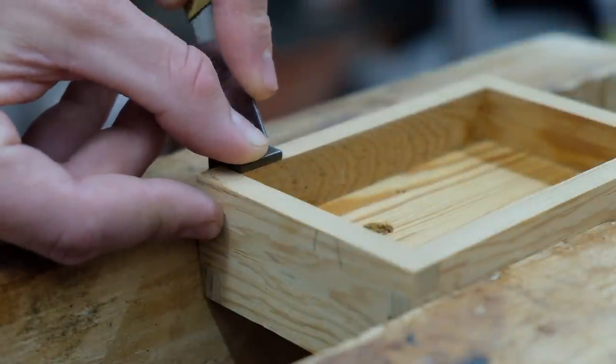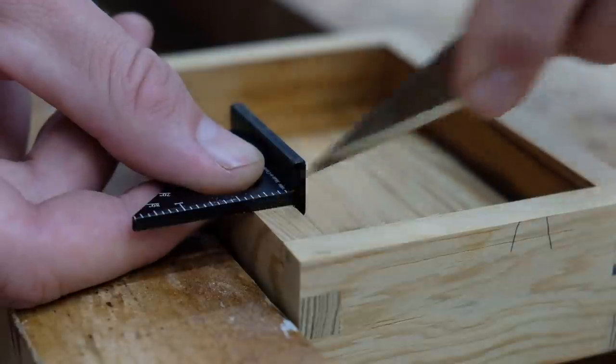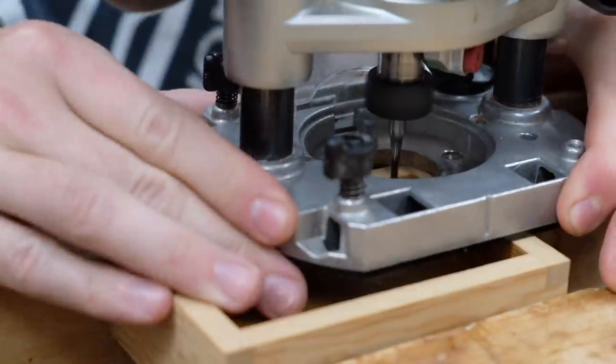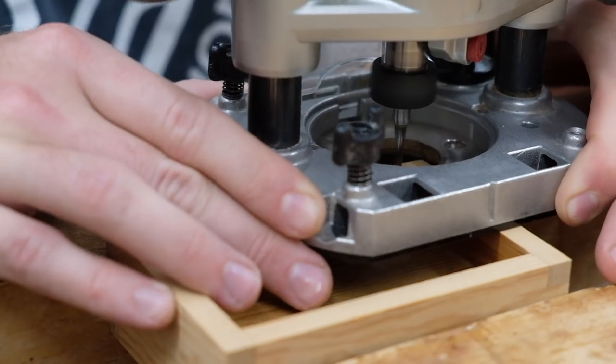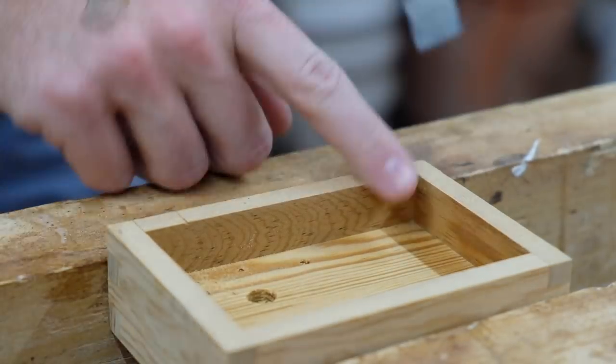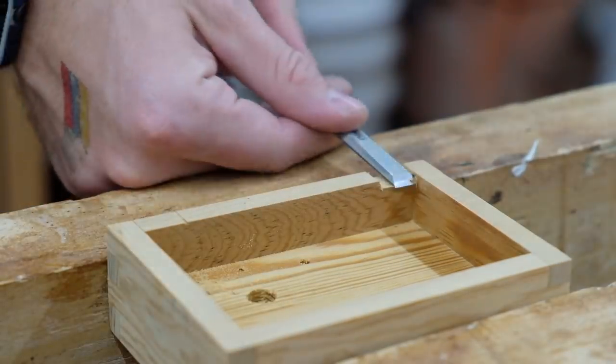Next, I could begin installing the hinges. I got these little guys from Horton Brasses, and they're really small but still very high quality, and they're priced as such. Anyways, I marked my lines with a knife, then routed the bulk away with an 1/8 inch spiral bit. A little cleanup with the chisel, and I could then drill my holes for the screws.